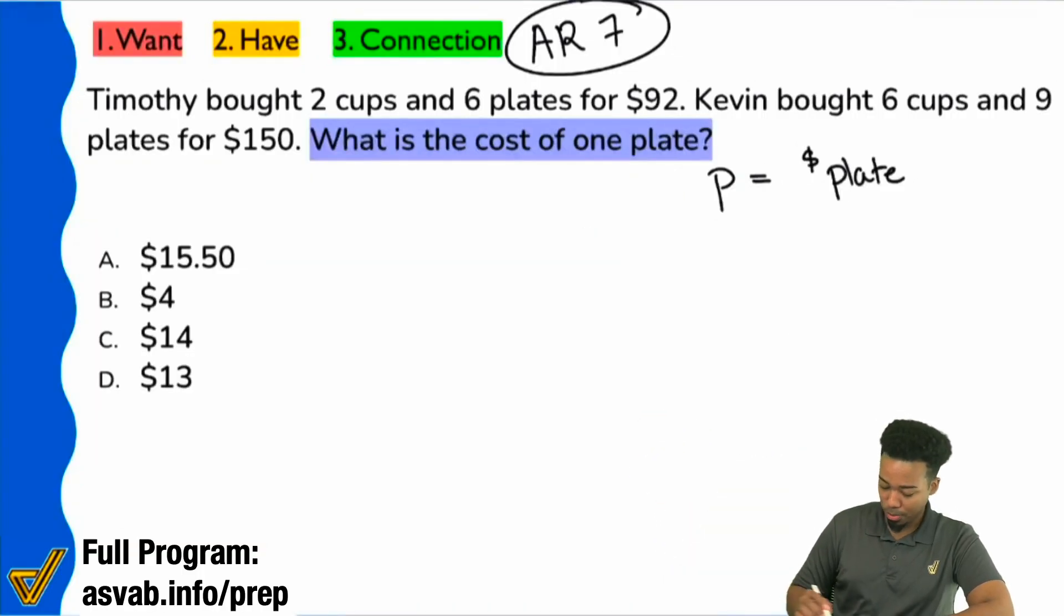So if I read through, I see that it says Timothy bought two cups and six plates for $92. So I see the plates right there. I don't know how cups is going to be included here. But then it says Kevin bought six cups and nine plates for $150. Okay. So right there I'm noticing that, yeah, we're looking for plates, but another unknown variable is the cost of a cup.